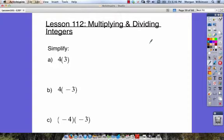So our first problem is to simplify 4 times 3. Well, we know 4 times 3 is equal to 12.